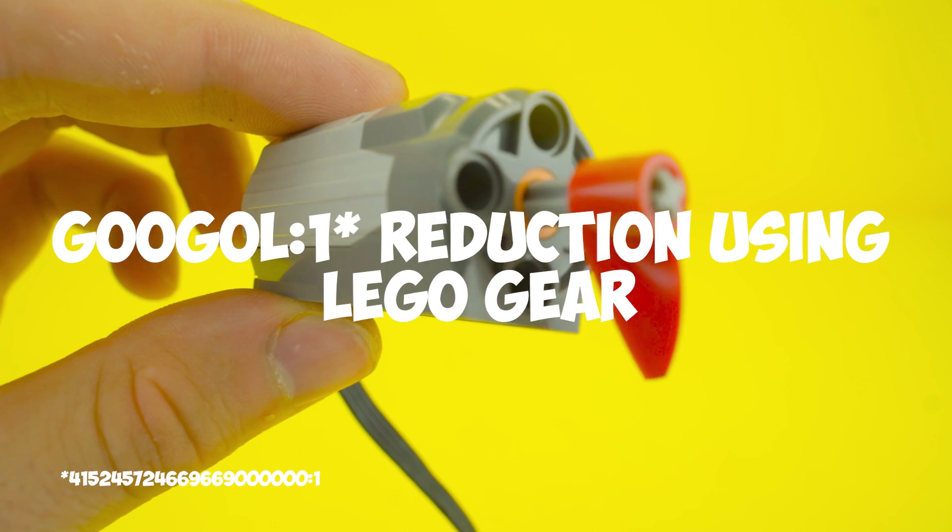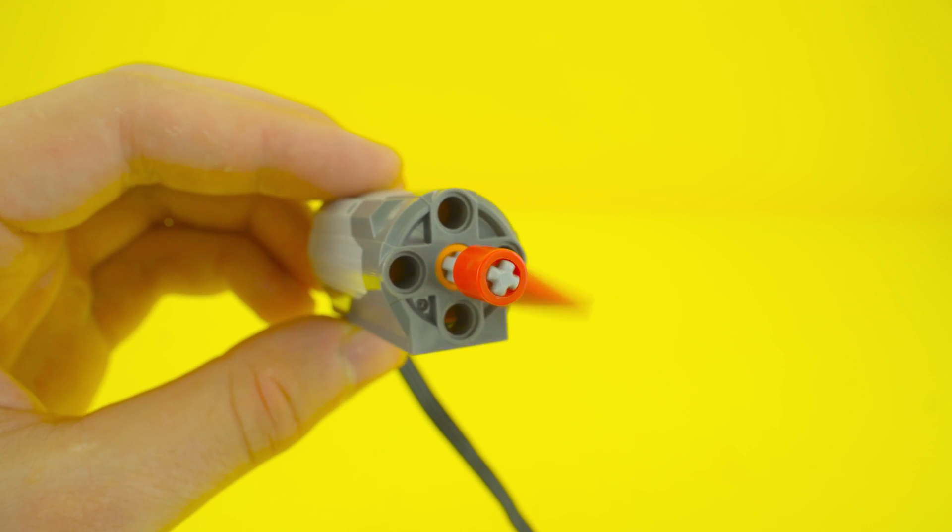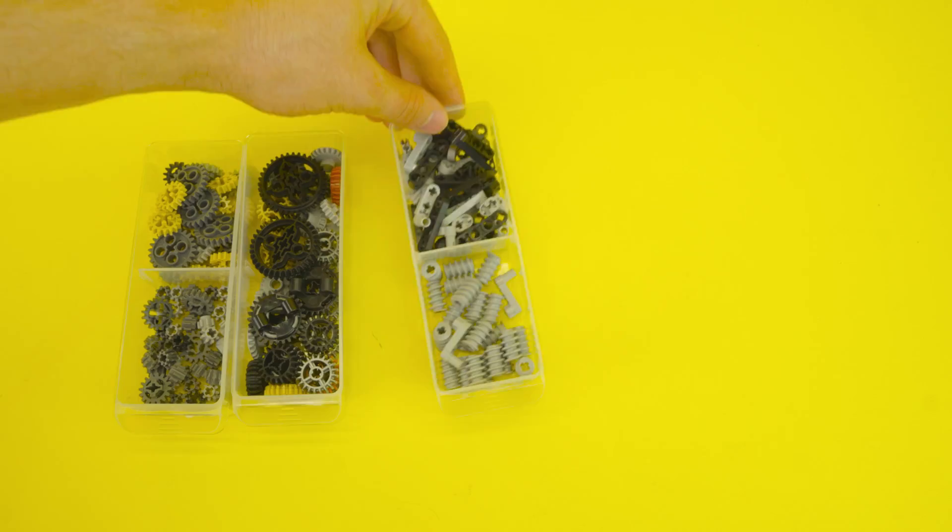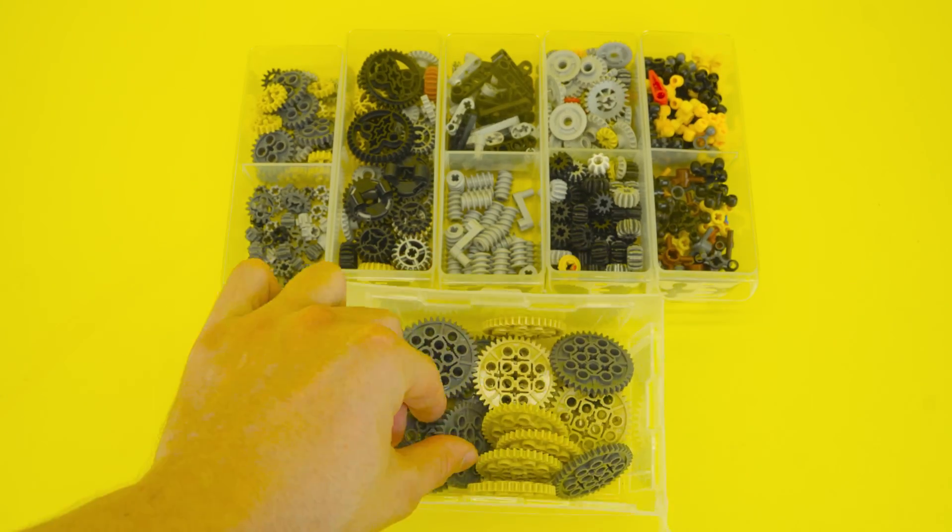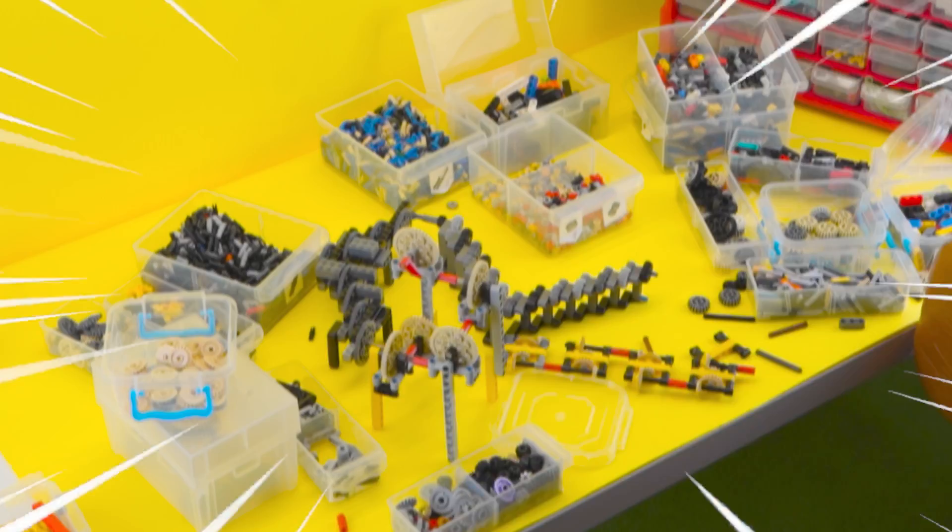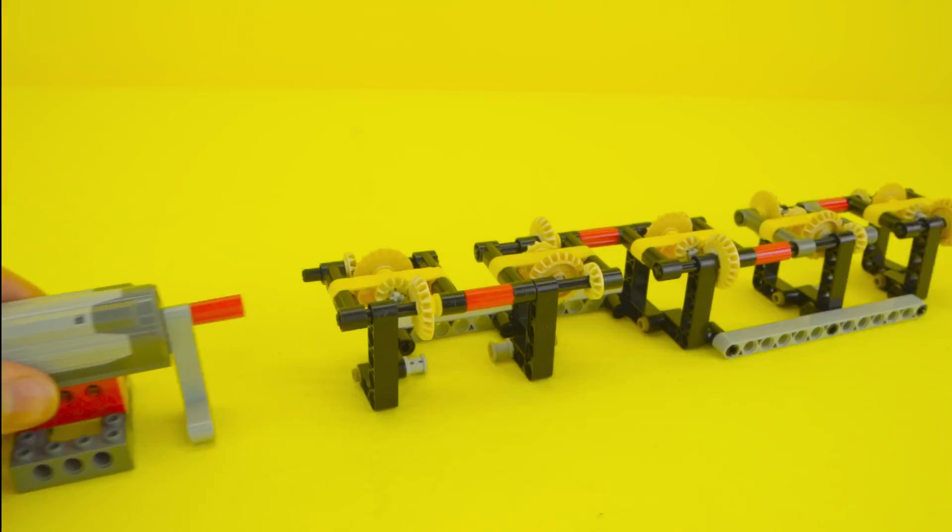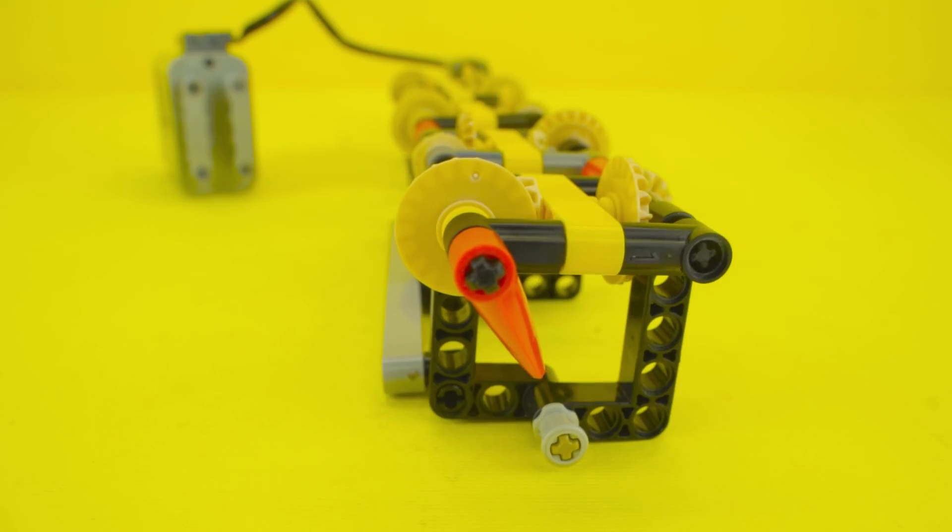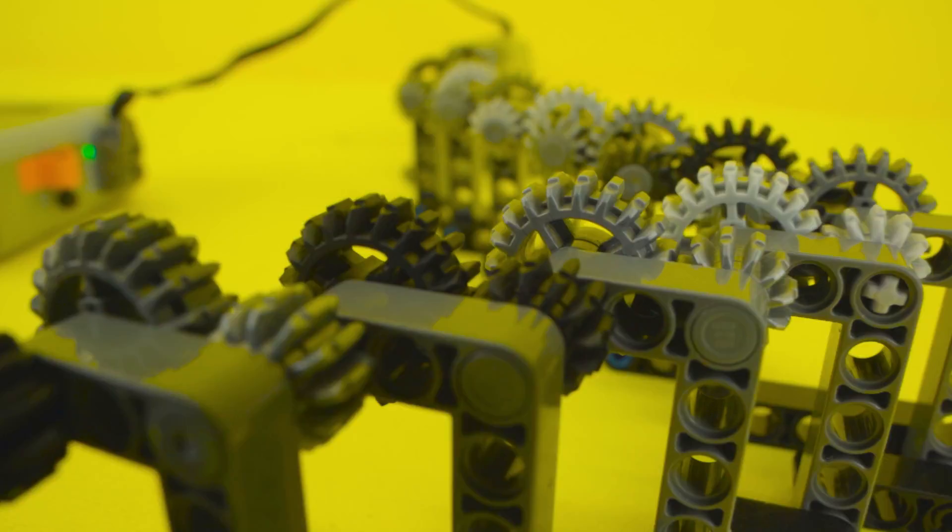Experiment 5: Googol 1 reduction using Lego gears. A standard Lego motor spins at 340 RPM, but with the right gears, we can slow this down so much that a full revolution would take 14 billion years. Each gear stage slows down the rotation by a certain factor, and when combined, the reduction is astronomical.